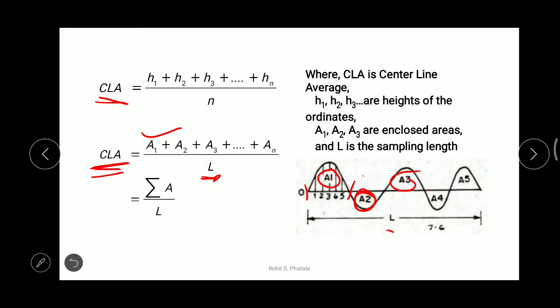The surface roughness in this method is the average deviation from the nominal surface, defined as the average value of the ordinates from the mean line. CLA stands for centerline average. H1, H2, H3 and so on are the enclosed areas, and capital L is our sampling length. This concludes the centerline average method.